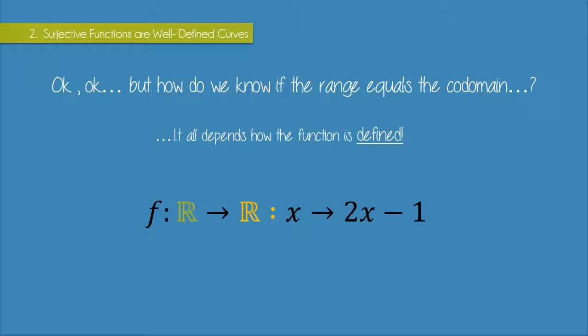So before we can tell if functions are surjective or not, we need to be able to read function notation like this. And some people get a bit intimidated by this kind of function notation. But it's not actually too bad. So this is just the function 2x minus 1. So I could have just wrote that as y equals 2x minus 1. But instead we are being given some additional information with this real maps to real. So what does that actually mean?